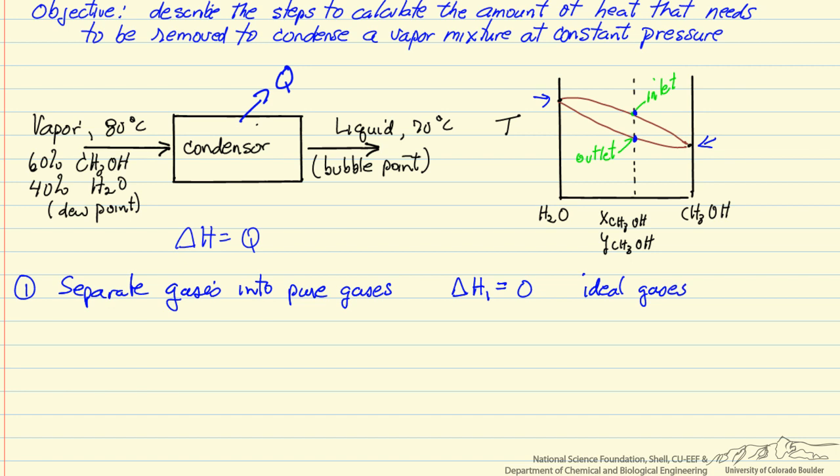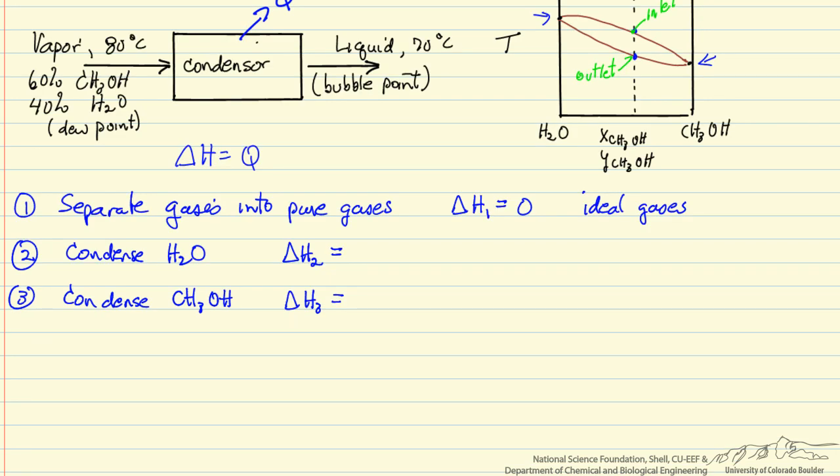Then we are going to condense each of the species. We know the heat of vaporization for the pure components. I have written down the condensed water, delta H, and we are going to pick as our basis 1 mole, so we have 4 tenths of a mole of water times minus delta H of vaporization for water, that will be delta H2, and this is at 80 degrees C, so we could look this up in the steam tables.